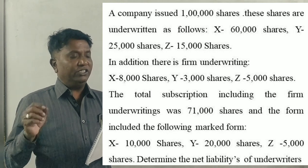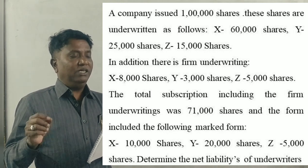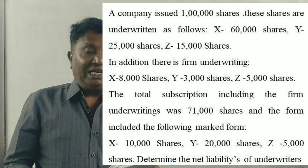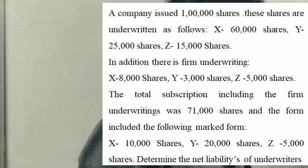The total subscriptions including the firm underwriting was 71,000 shares and the firm included the following marked forms: X 10,000, Y 20,000, Z 5,000 shares. Determine the net liability of underwriters.